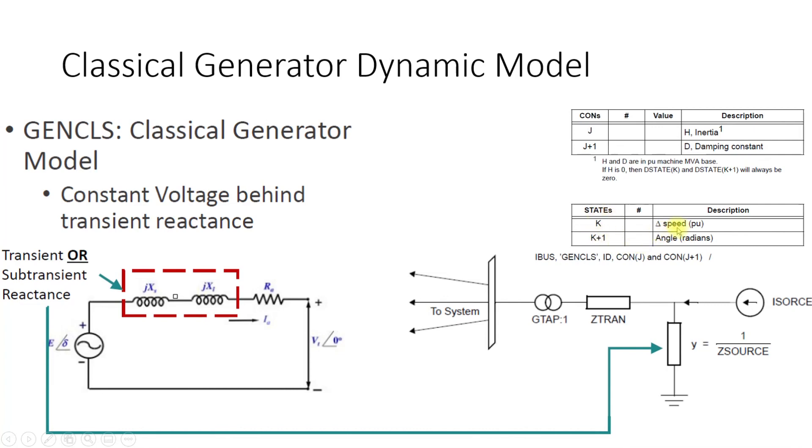Similarly, the algebraic variables in this case are the speed or the speed deviation and the angle in radians. This angle is the same which we are going to check whether following a disturbance this angle goes out of step or what happens to this angle.